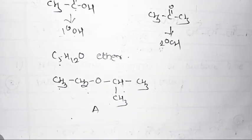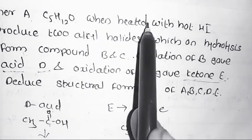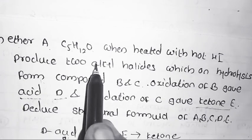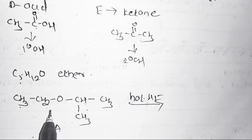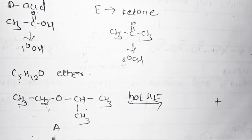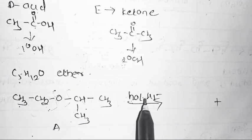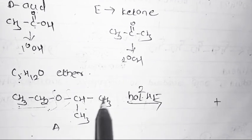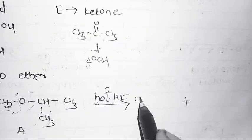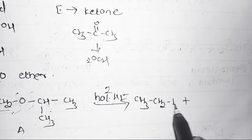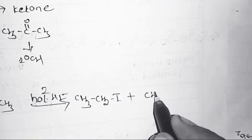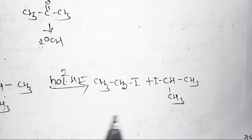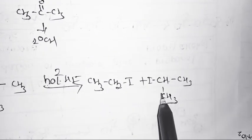First condition: A is heated with hot HI. This ether reacts with hot HI to produce two products by breaking two C-O bonds, using two molecules of HI. First product is CH3CH2I (ethyl iodide) and second is (CH3)2CHI (isopropyl iodide).